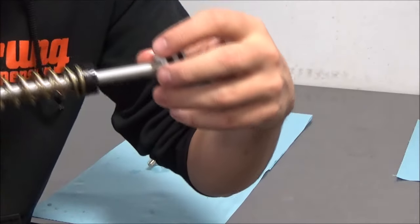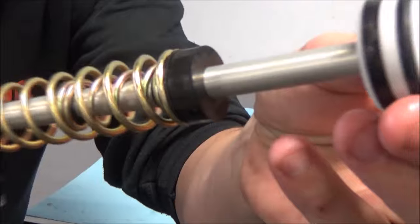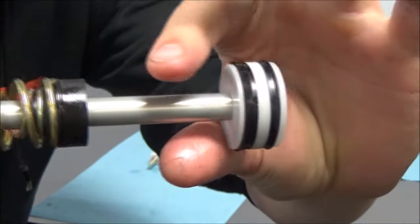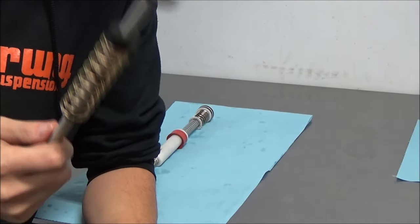So they added this second U-cup here, which is just a scraper seal. The idea of that is that it just basically scrapes the oil off the inside of the stanchion, prevents it getting out there. That was a big improvement.